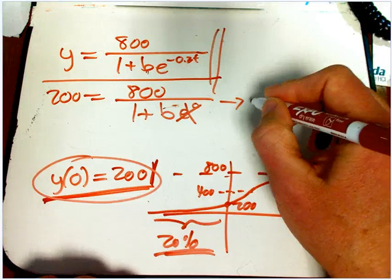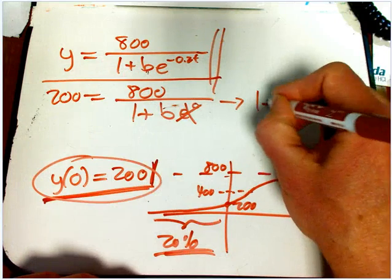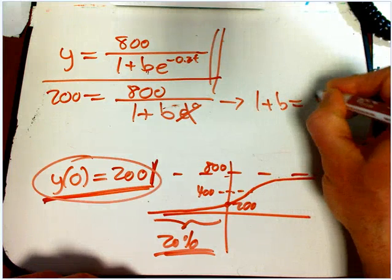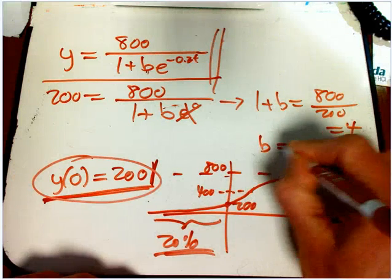So now, that means if I cross-multiply the 1 plus B, and then divide by the 200, they just switch places. Hey, that's just 4, and so B equals 3.